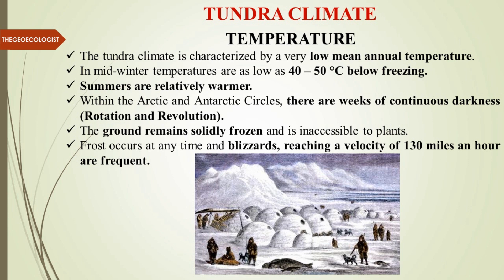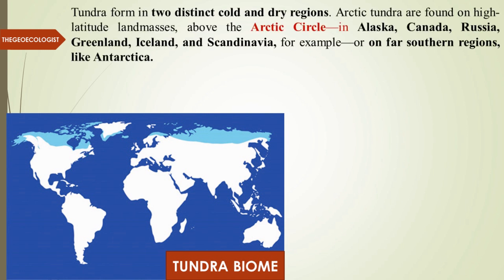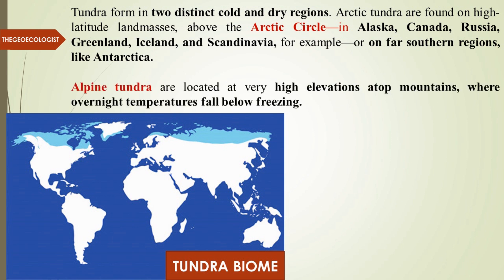The tundra biome is found in two distinct cold and dry regions. The first is Arctic tundra, covering Alaska, Canada, Russia, Greenland, Iceland, and Scandinavia, as well as far southern regions in Antarctica. The second is alpine tundra — the word 'alpine' comes from the Alps — found at high elevations atop mountains such as the Alps and Himalayas, where temperatures similarly drop below freezing.